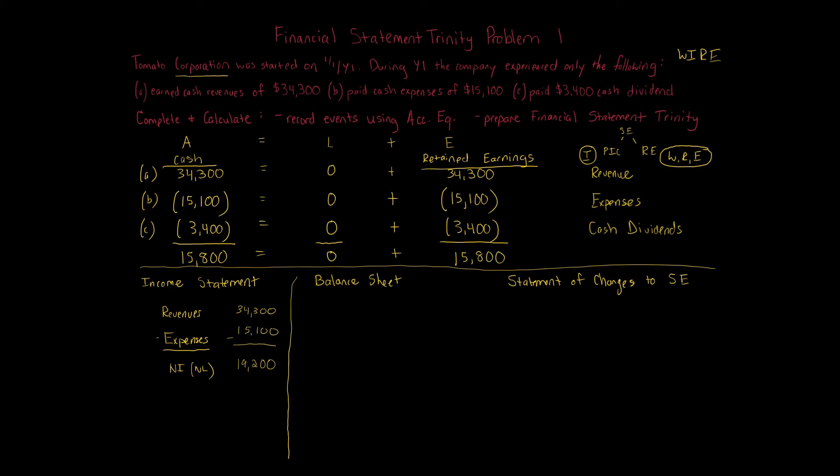This is the simplest version of an income statement you'll see. The idea is that this problem is meant to be extremely simple with only three transactions — just a broad understanding of what an income statement, balance sheet, and statement of changes to stockholders' equity are at a very simplistic standpoint. This is the bare bones baseline of understanding financial statements.